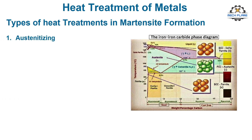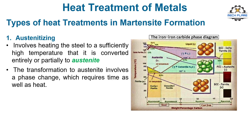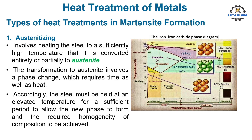Austenitizing involves heating the steel to a sufficiently high temperature that it is converted entirely or partially to austenite. This temperature can be determined from the phase diagram for the particular alloy composition. The transformation to austenite involves a phase change, which requires time as well as heat. Accordingly, the steel must be held at an elevated temperature for a sufficient period to allow the new phase to form and the required homogeneity of composition to be achieved.